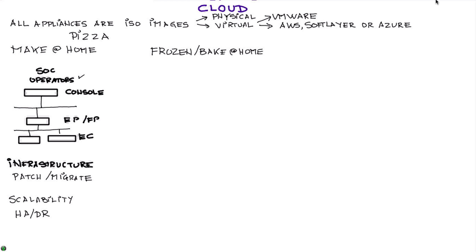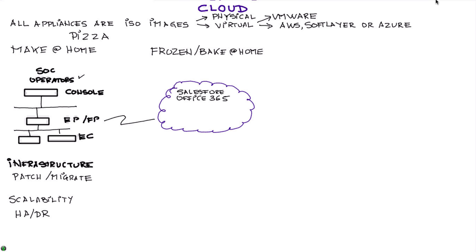Now say I don't want to do all that work. Like buying frozen pizza and baking it at home — in the case of SaaS applications like Salesforce, Office 365, and many others, QRadar has DSMs built that perform RESTful API calls to retrieve those logs. You can consume those in your standard environment and get quite a bit of visibility into what is happening on the cloud.